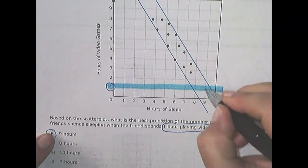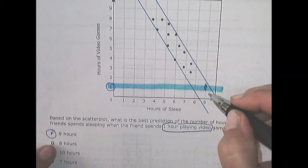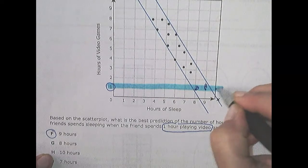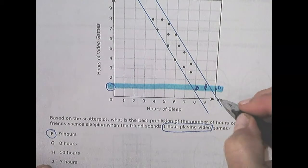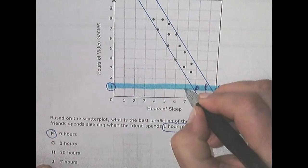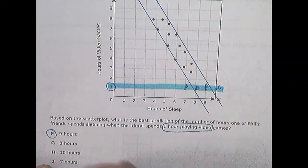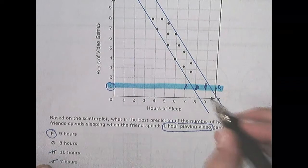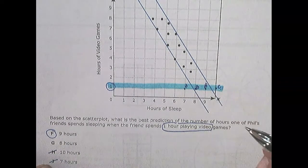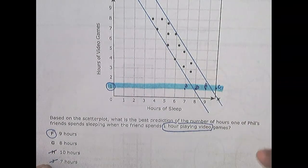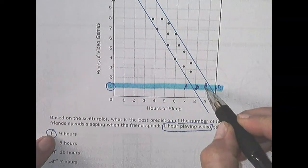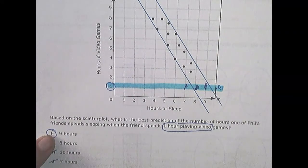So nine hours is predicted. That would be here. There's choice A. Choice B is eight hours. Choice C is ten hours. Choice J, or D, is seven hours. Is it D? No. Is it C? No. So here's A and here's B. I would say it's going to be closer to the middle. Answer A. Kind of easy. Next.